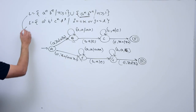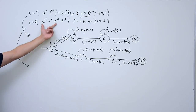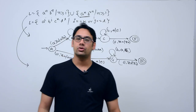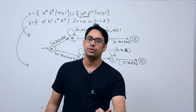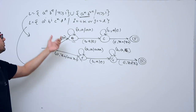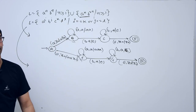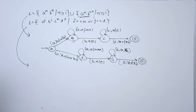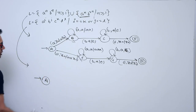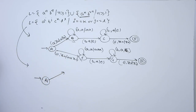Now for the second language (a^i b^j c^k d^l, i=k or j=l): either i should equal k, or j should equal l. Therefore we are going to make two pushdown automata — the first representing i equals k, and the second representing j equals l.